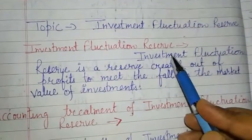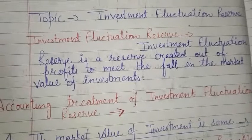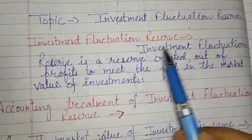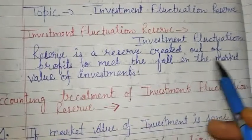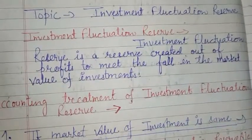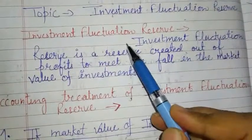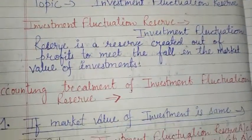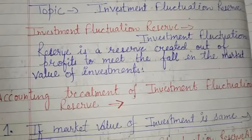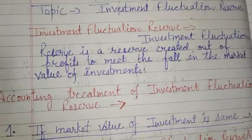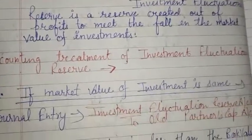This reserve is maintained in partnership firms. It is created out of profit to meet the fall in the market value of investments - meaning to bear the changes in market value. When a new partner is admitted, adjustments related to Investment Fluctuation Reserve are made in the books of accounts, which I will explain through numerical entries.